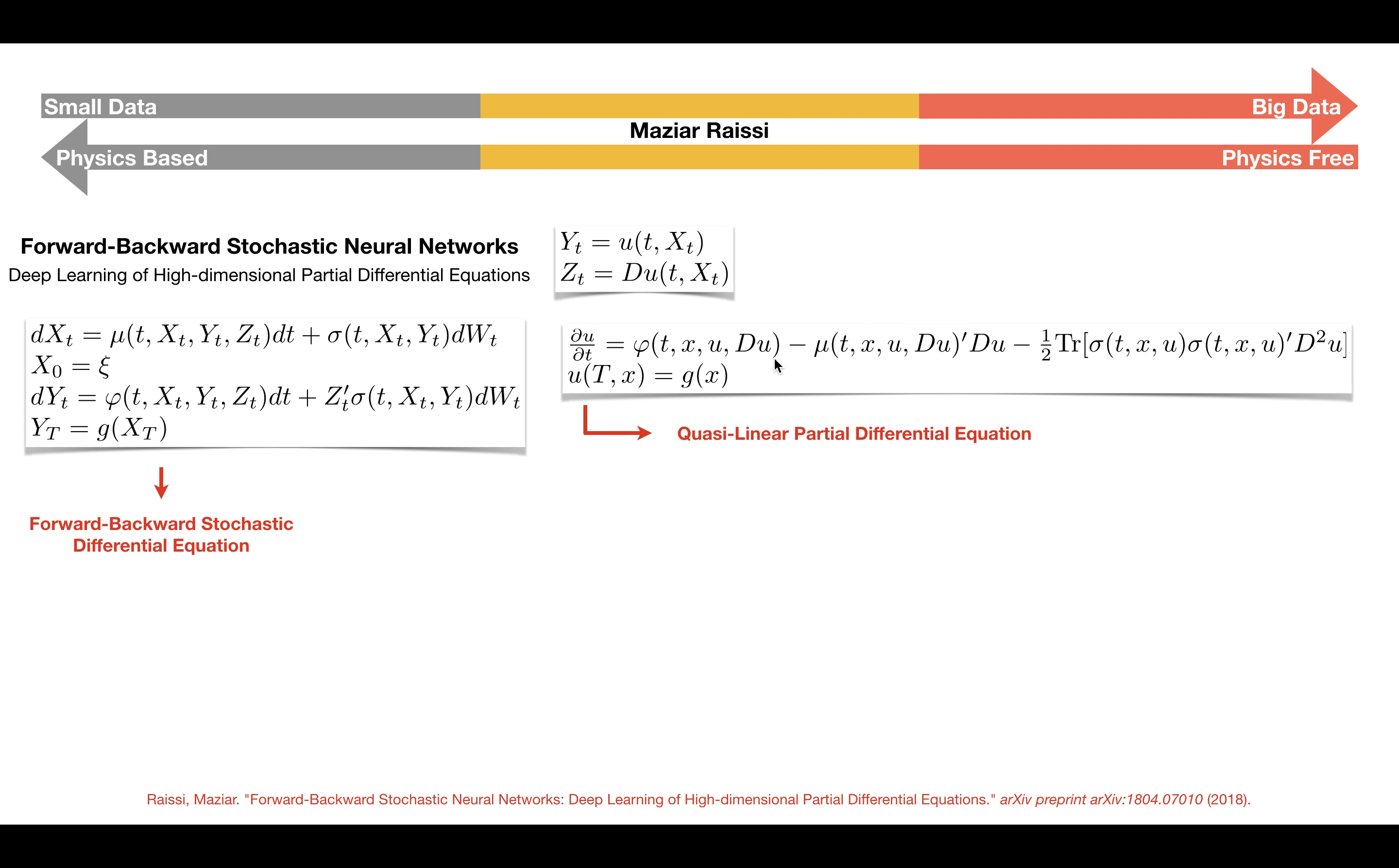Here, du is the gradient vector and d squared u denotes the Hessian matrix. We are going to approximate the unknown solution u by a deep neural network. We use automatic differentiation to obtain the required gradient vector du.